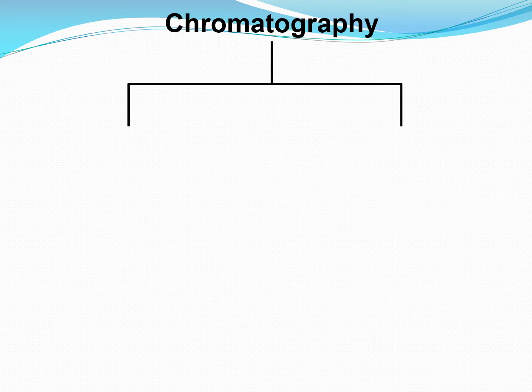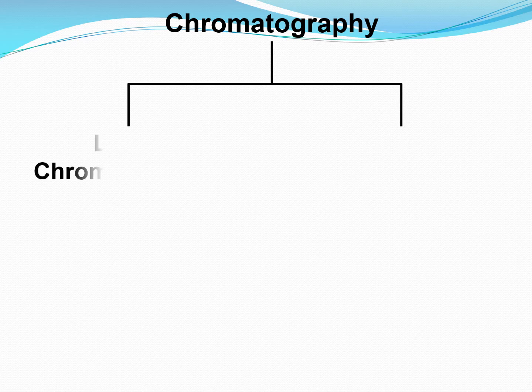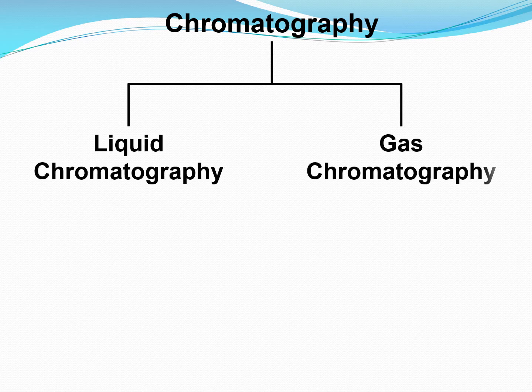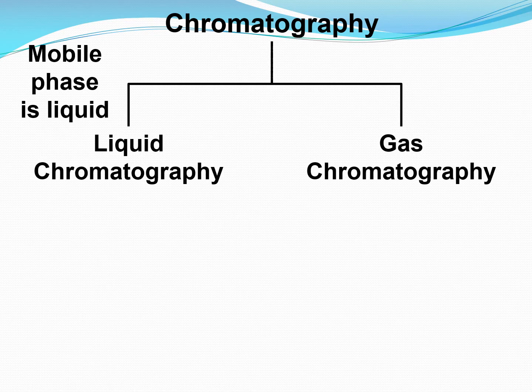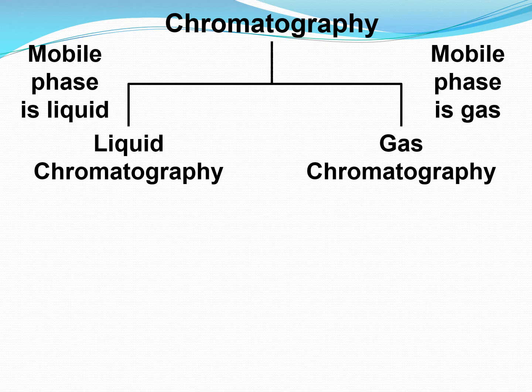Now let us look at how chromatography can be classified. Based on the mobile phase, chromatography is classified into liquid chromatography and gas chromatography. In liquid chromatography the mobile phase is a liquid, and in gas chromatography the mobile phase is a gas.